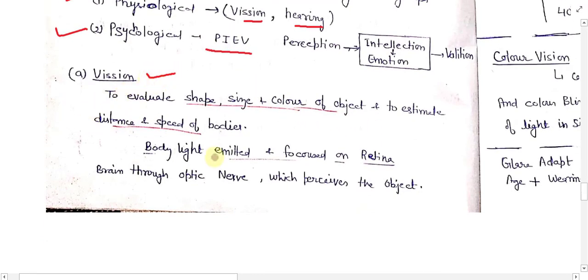The first physiological factor is vision — to evaluate shape, size, and color of objects and to estimate distance and speed. Vision is a very important factor and varies from person to person. Light is emitted and focused on the retina, and the brain processes how the image forms inside the eyes and how the brain copes with those images.